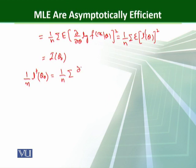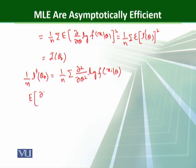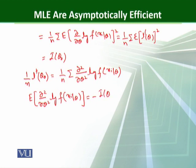Now consider the denominator term, which is 1 over n times L double dash theta naught. This equals 1 over n times the sum of the second partial derivative with respect to theta squared of log f of xi given theta. Applying the law of large numbers and taking the expected value, the expected value of the second derivative of log f of xi given theta equals minus I of theta naught.